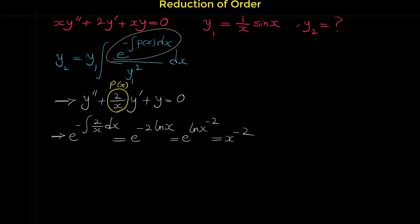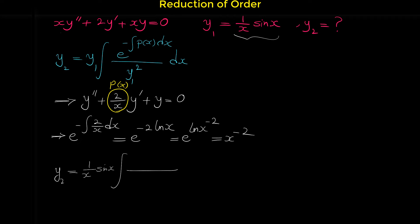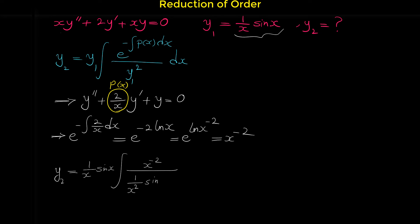Now that we have x^(−2), the second solution is: y2 = (1/(x·sin(x))) · integral of [ x^(−2) / (1/(x·sin(x)))² ] dx. Squaring y1 gives 1/(x²·sin²(x)), so x^(−2) in the numerator is 1/x², and we can cancel 1/x² with 1/x² in the denominator.